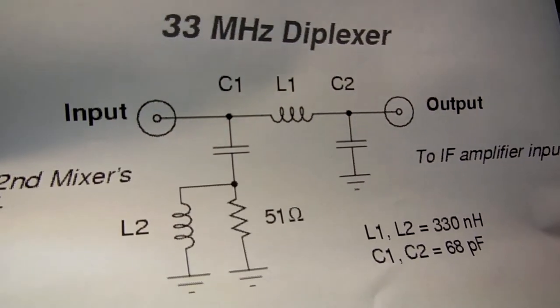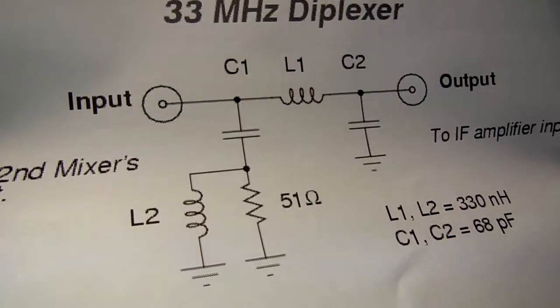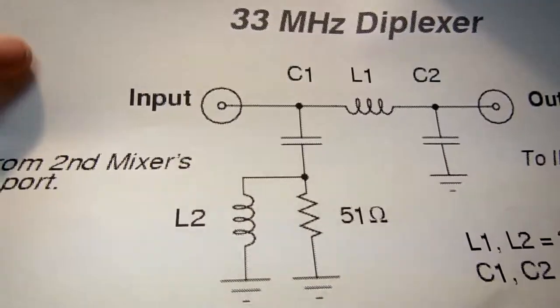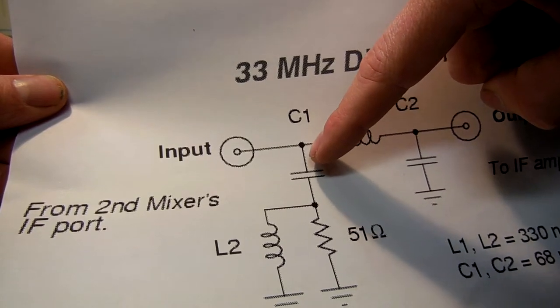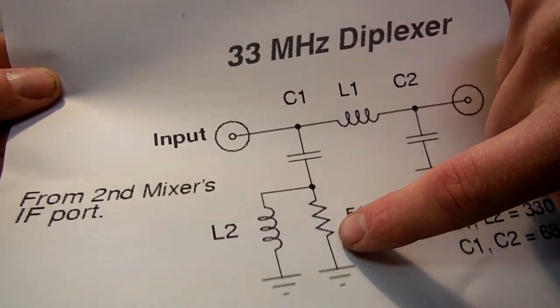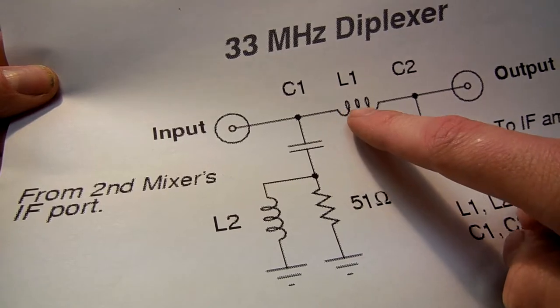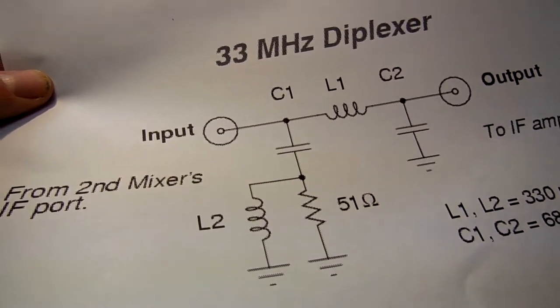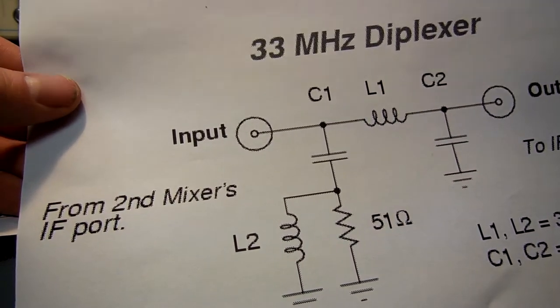These components need to be RF quality surface mount, and the inductors need to have a self resonant frequency above the operating IF frequency. This particular diplexer is tuned to 33 megahertz. So what that means is the input from the mixer, when it comes to this inductor capacitor junction, frequencies higher than 33 megahertz are going to go through this capacitor into the load resistor, which is 50 ohm load essentially. Frequencies lower than 33 megahertz are going to get passed onto the output, which is also 50 ohms based on our amplifier. This forces the mixer to see 50 ohms over a very wide frequency range and it reduces the chances of intermodulation distortion products being produced.